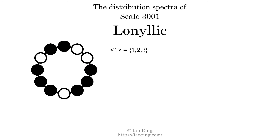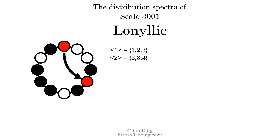The spectrum width of this generic interval is the highest, 3, minus the lowest, 1, which equals 2. The generic interval of two scale steps comes in three different specific interval sizes: two semitones, three semitones, and four semitones. The spectrum width of this generic interval is 2.